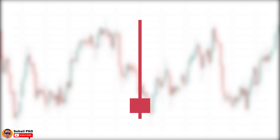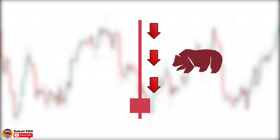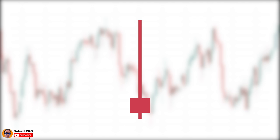For this rejection candle with a long upper shadow, it shows us that in that time period, the bulls pushed the price up considerably but at the end, the bears took control and drove the price to lower levels somewhere near the opening price. This candle shows us that while the bulls were in command and pushing the price up, these high prices were rejected. There were no interested buyers at these prices and the selling interest increased suddenly and the price went down.